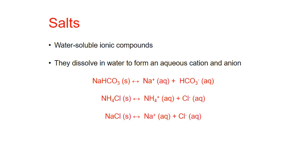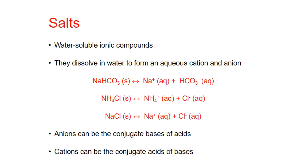It turns out that anions can be the conjugate base of an acid, and therefore they have the potential to turn a solution basic. Cations in solution could be the conjugate acid of a base, and could turn a solution acidic.